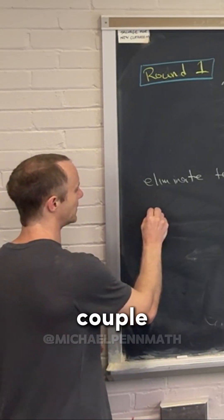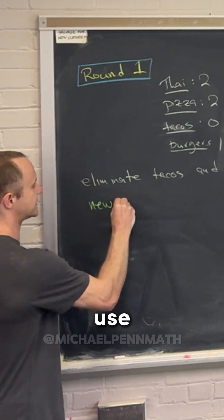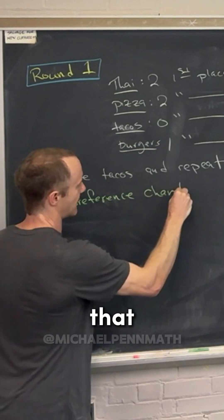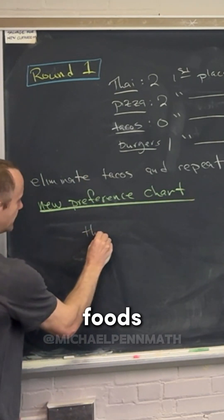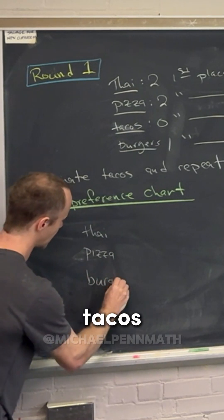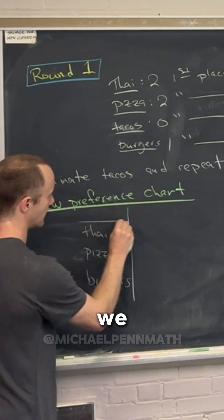After you do a couple of these, you can use the same preference chart and just write on it. But that being said, so let's put all the foods: Thai, pizza, and burgers. Notice that there's no tacos anymore because we eliminated that.